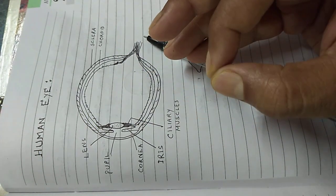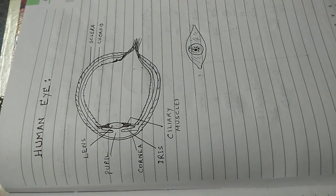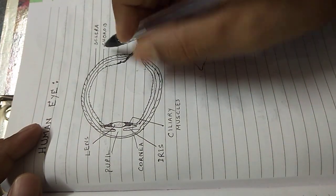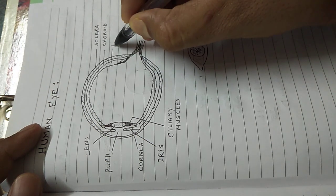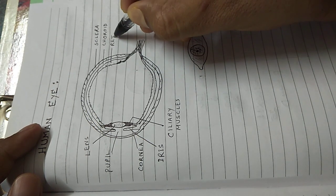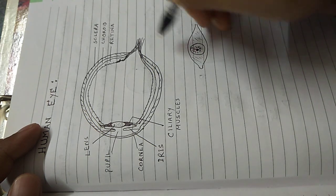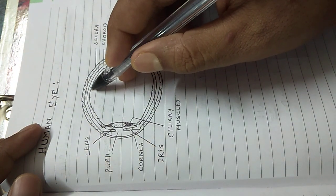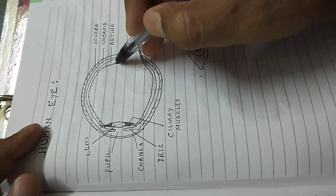The third and the innermost layer of the eye is called the retina. This retina is richly supplied with the light sensitive nerve endings, light sensitive neurons.